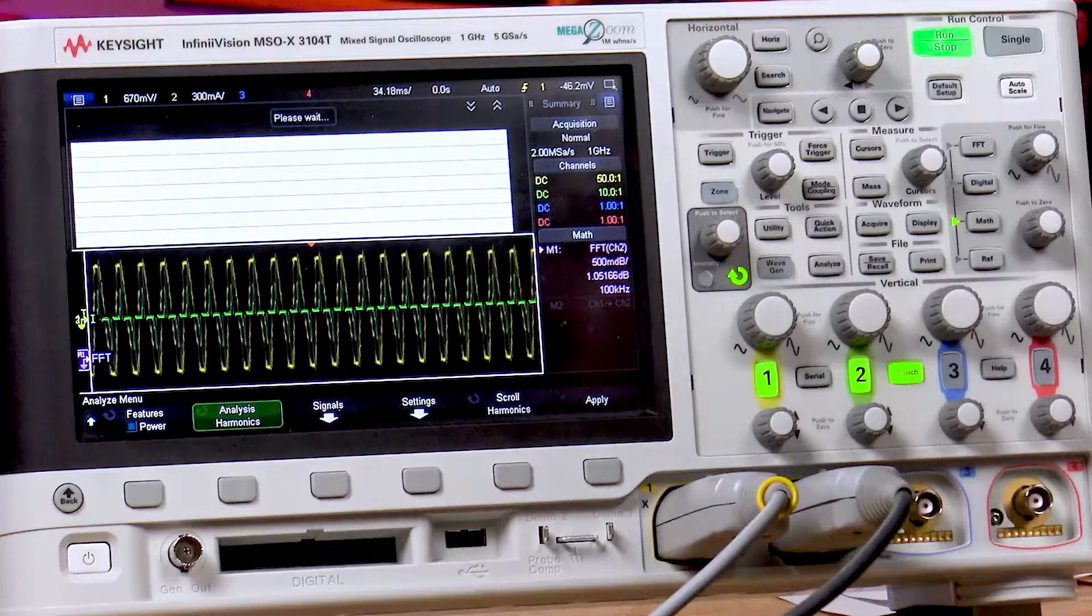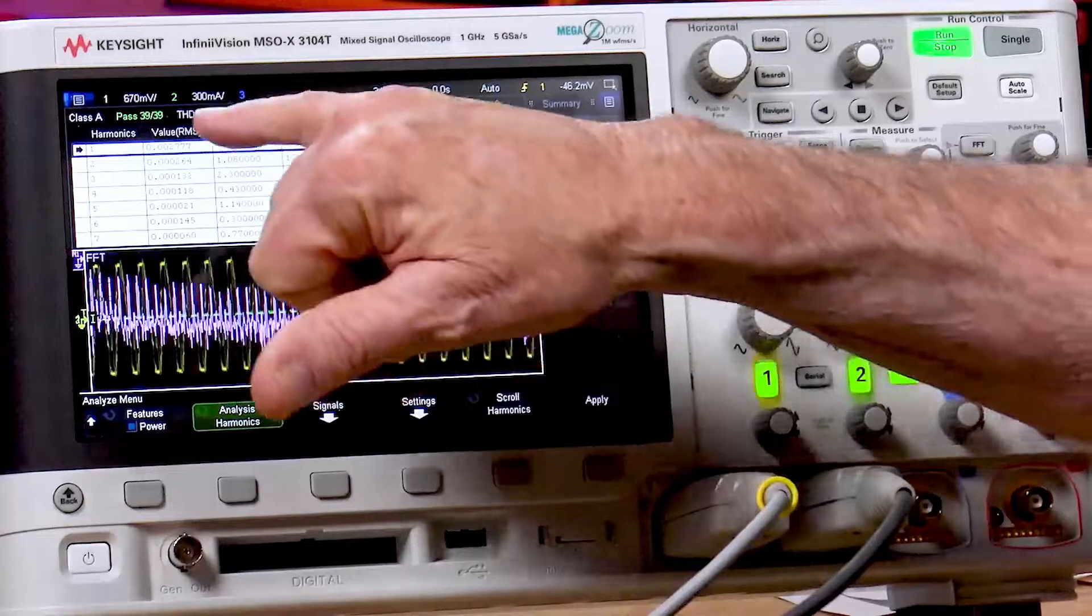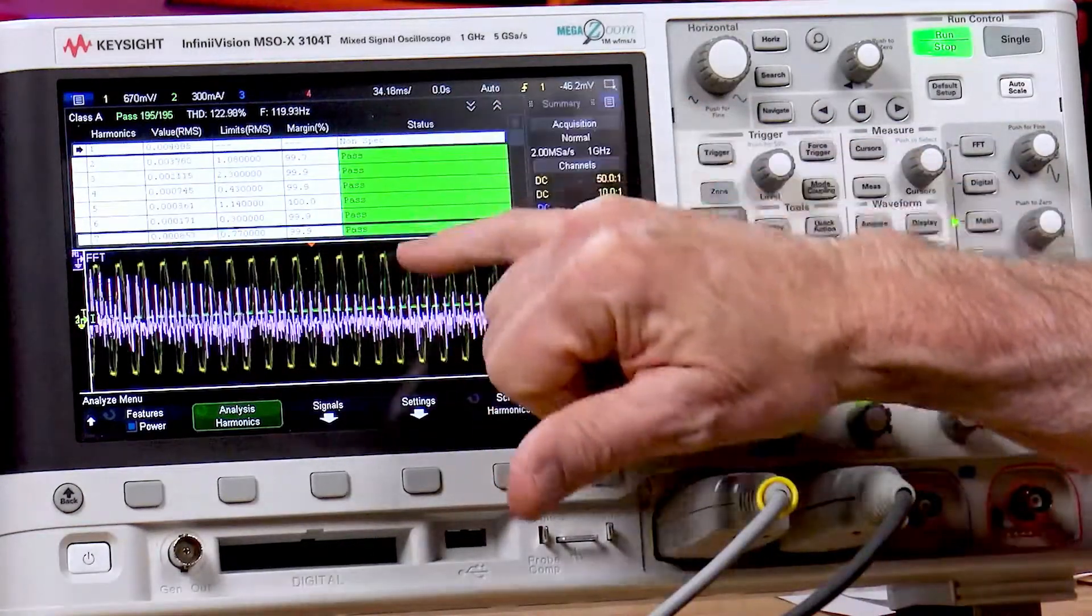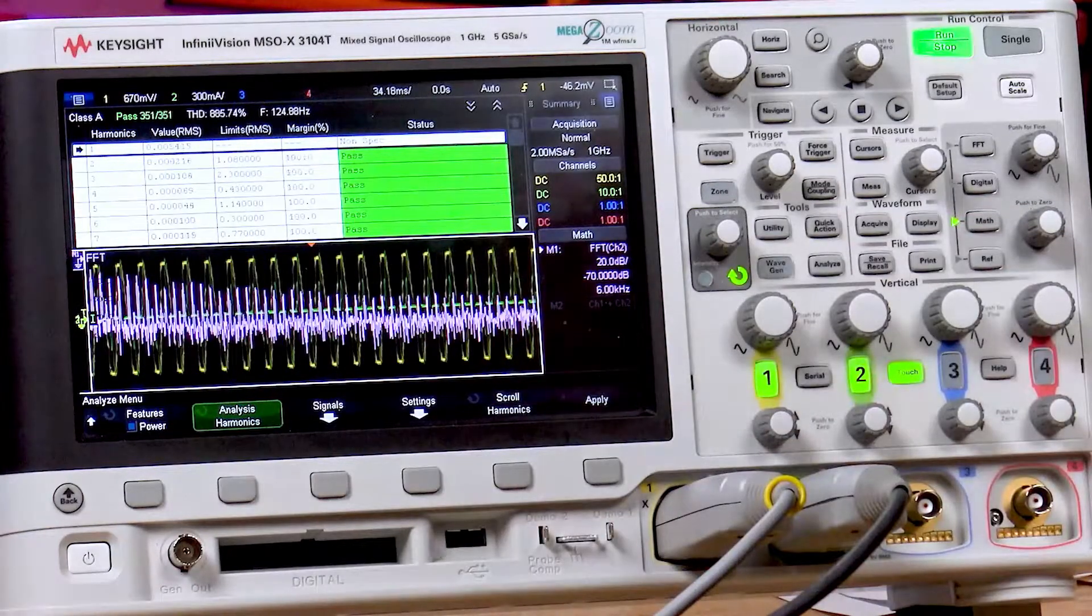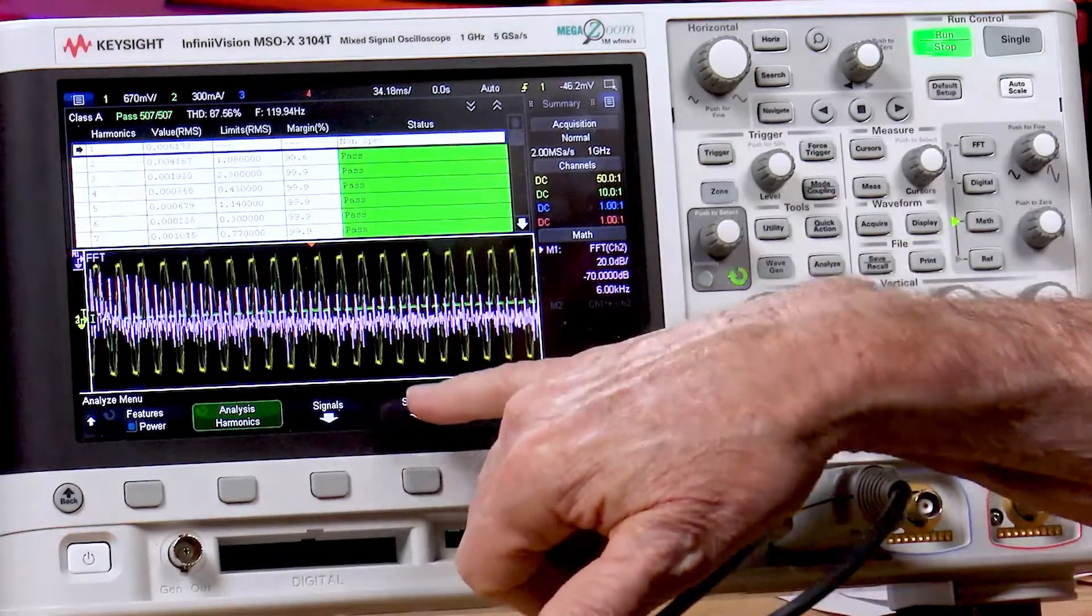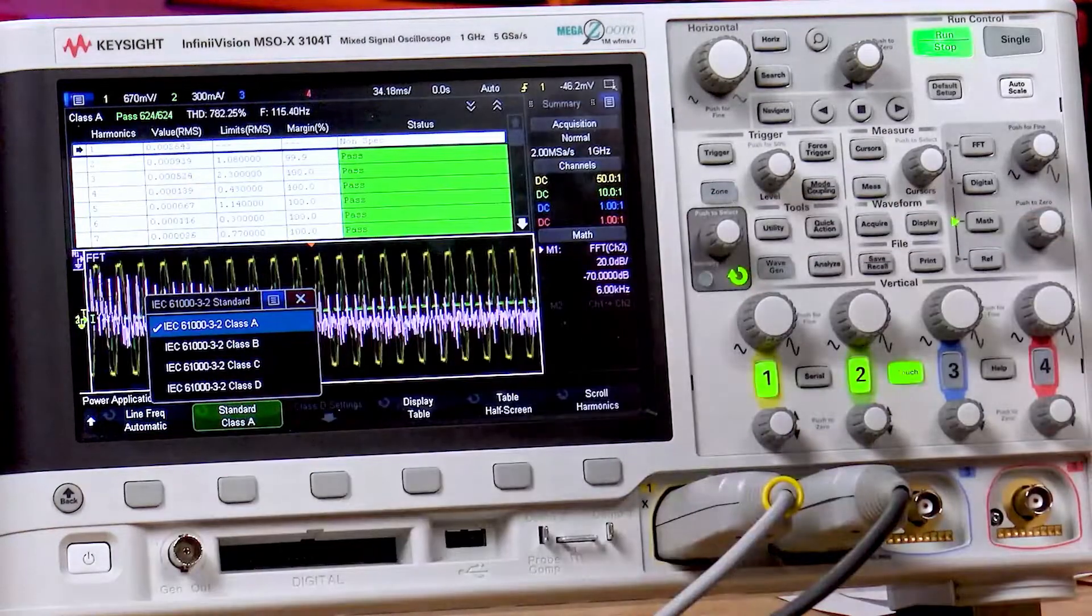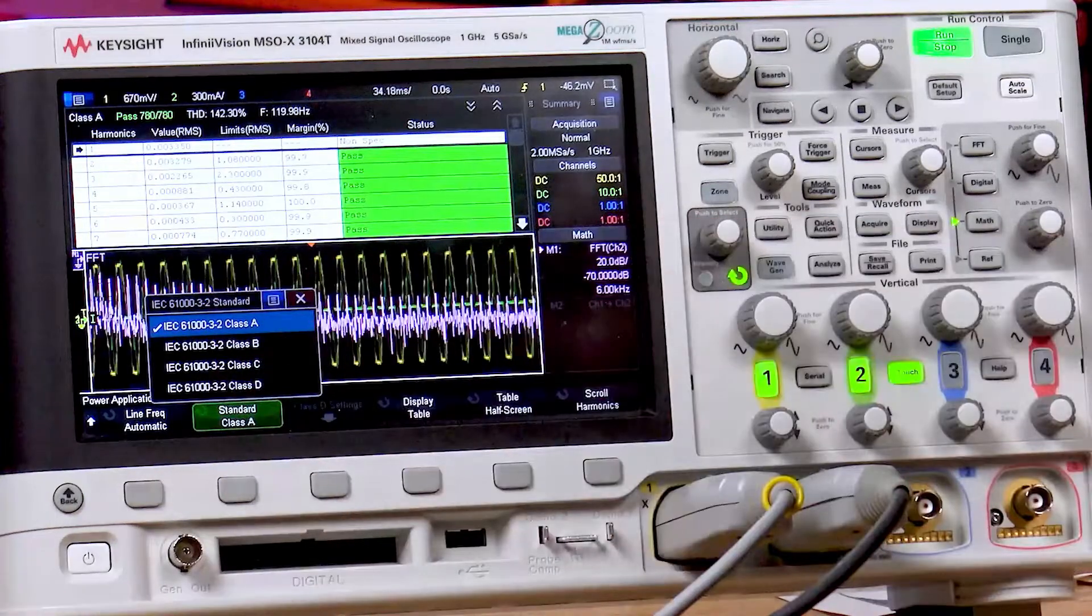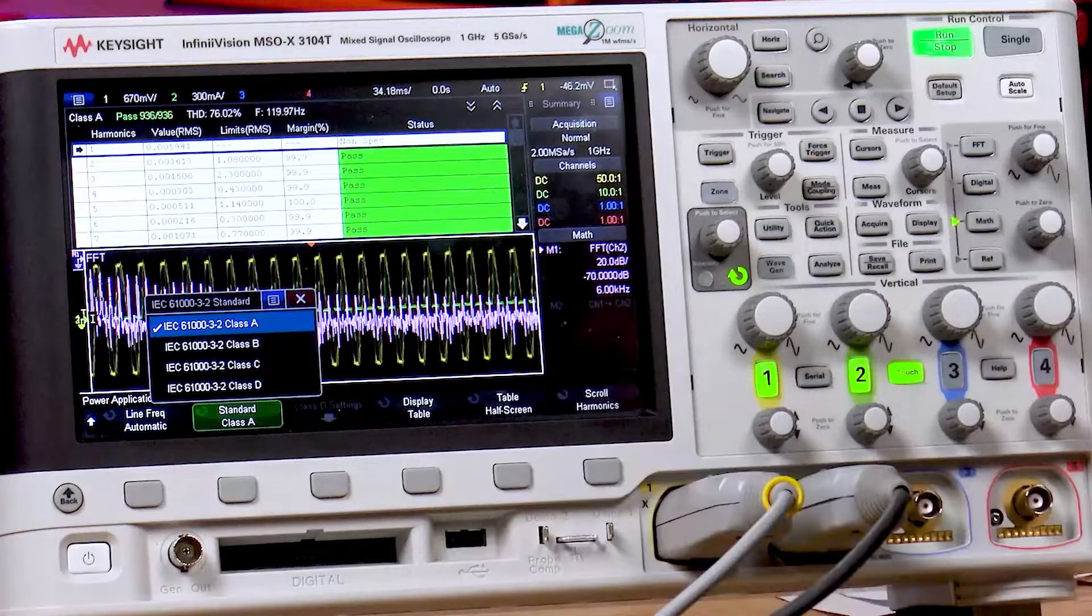It's going to run an FFT on the current waveform, and then bring up a table here that's Pass-Fail. Here you can see we're all passing. The purple waveform is the FFT on the current waveform. And you can select different types of compliance settings. It's based on the IEC 61000-3-2. Right now, we're doing a Class A compliance test up to the 40th harmonic.